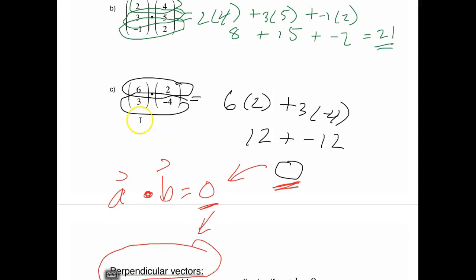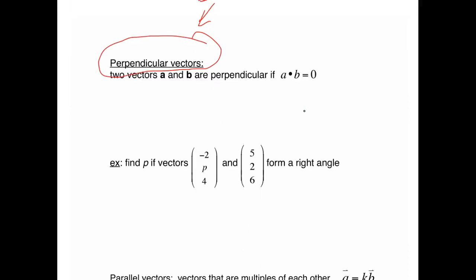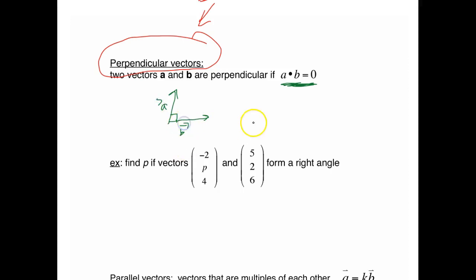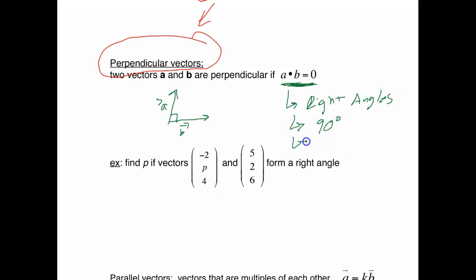Let's focus on perpendicular vectors. If the dot product of two vectors equals 0, those two vectors are perpendicular — one vector goes this way, the other goes this way, and you get a right angle between them. So dot product equals 0 equals perpendicular, which also means a right angle or a 90 degree angle. All those are key terms for it.